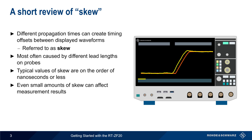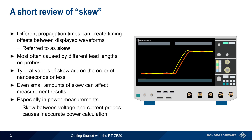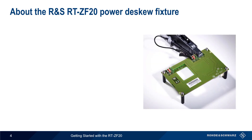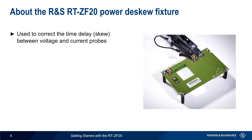Even very small amounts of skew can still have a non-negligible effect on measurement results. This is particularly true in the case of power measurements, where the skew between the voltage and current probes can lead to inaccurate power calculations. The RTZF20 power de-skew fixture can be used to correct for the time delay or skew between voltage and current probes when making power measurements.